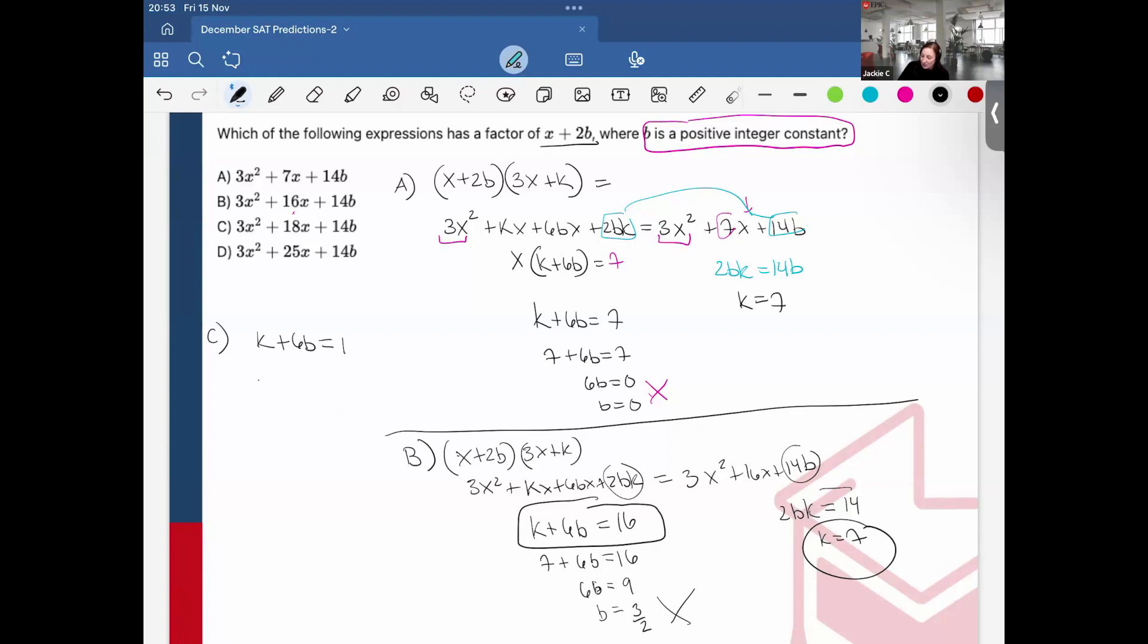So k + 6b = 18. And then we do 7 + 6b = 18, 6b = 11, and b = 11/6, again does not go in. So it's got to be D.